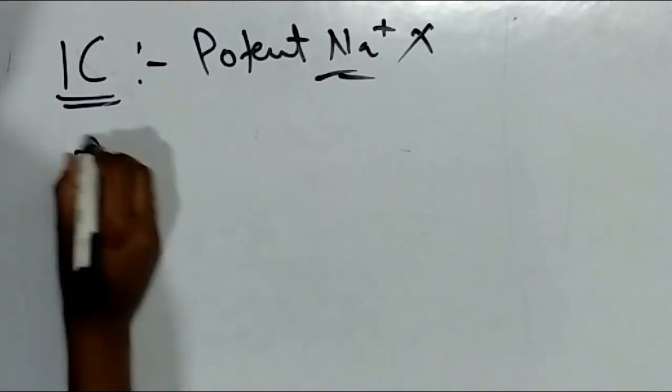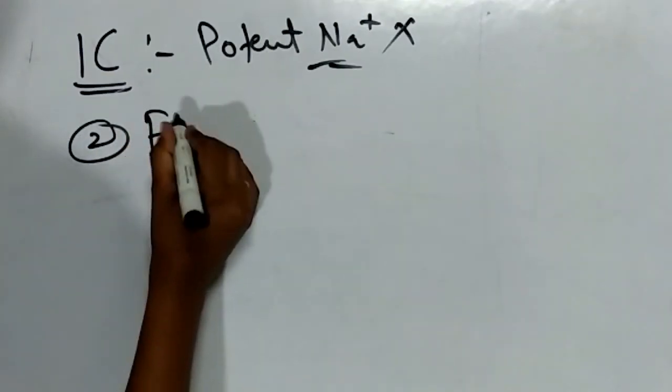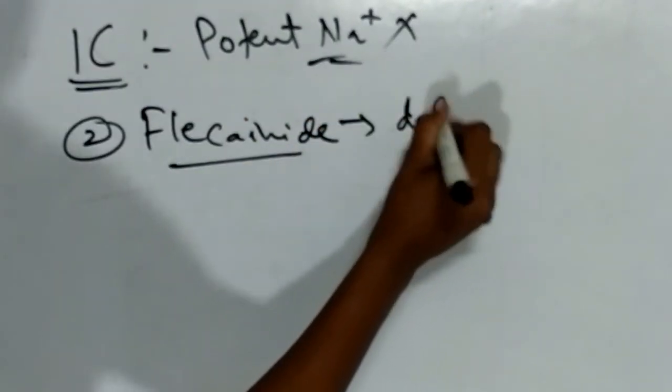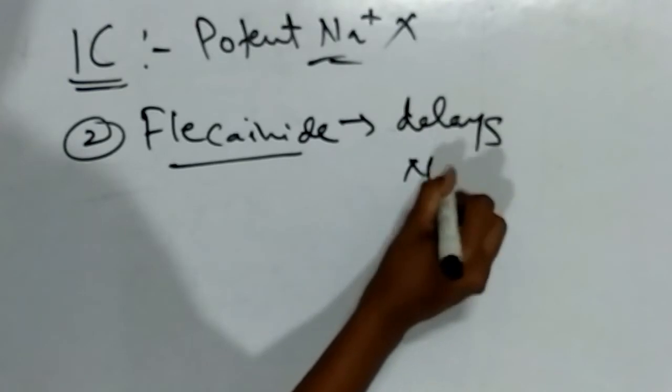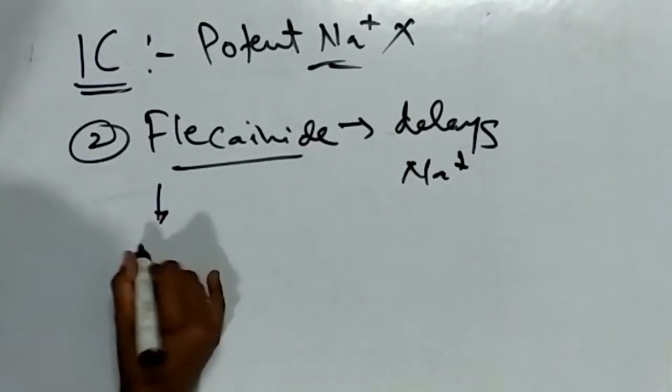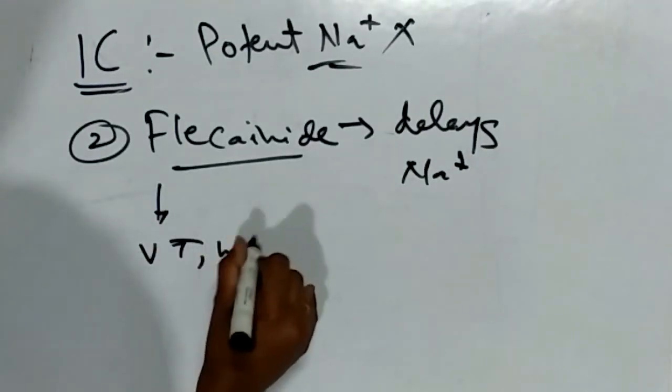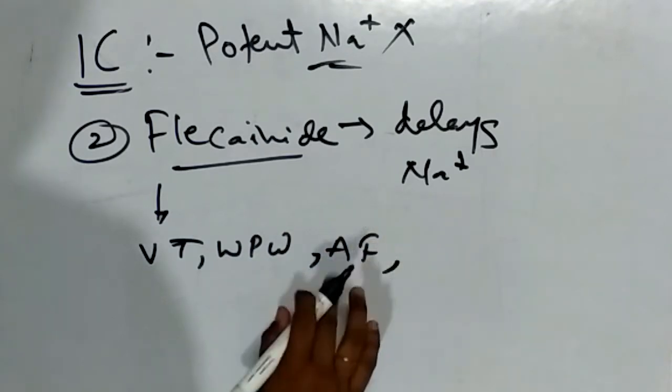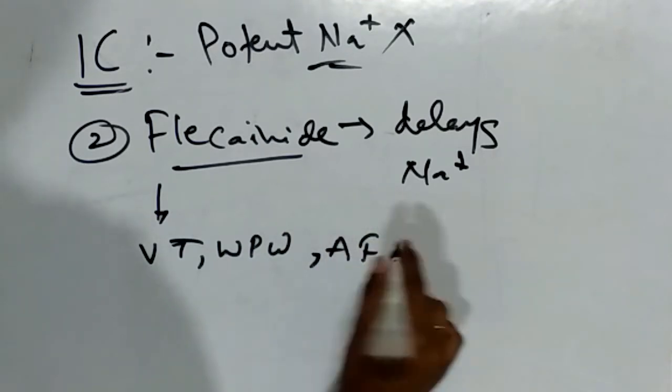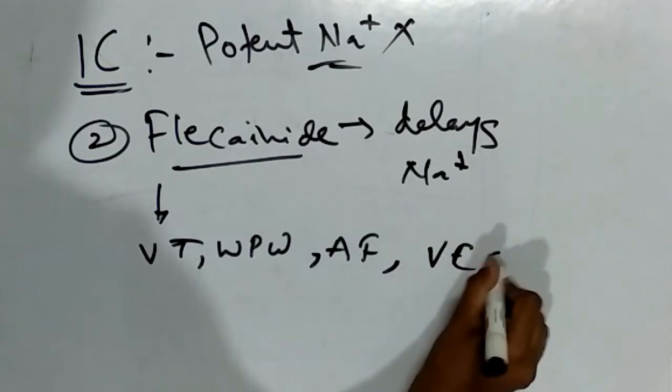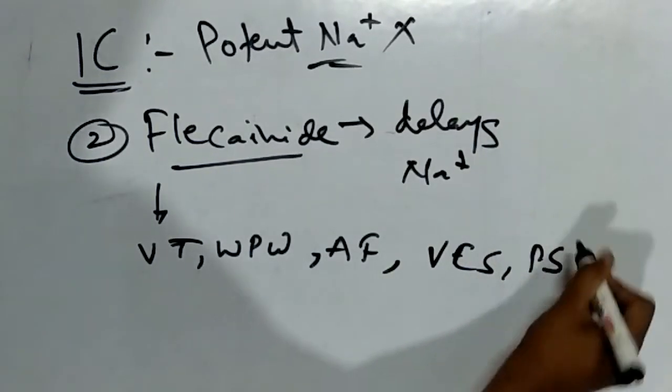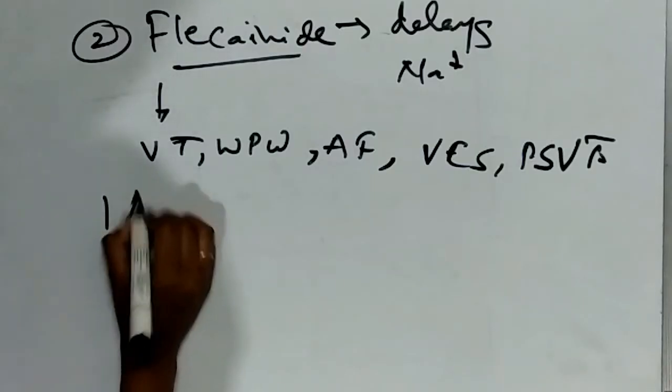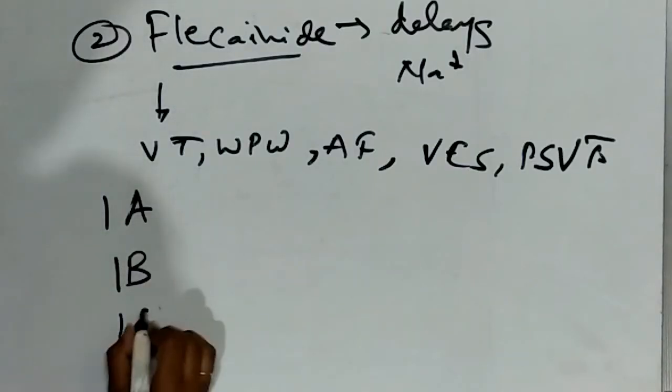The second drug of this class is flecainide. It delays the recovery of sodium channels. It suppresses ventricular arrhythmia, Wolff-Parkinson-White syndrome, atrial fibrillation, ventricular extrasystole, and post supraventricular tachycardia. We have seen class 1A, class 1B, and class 1C.